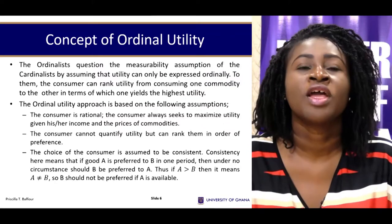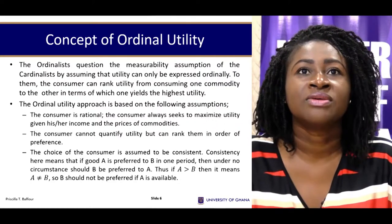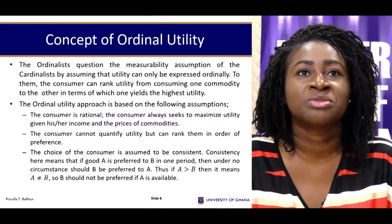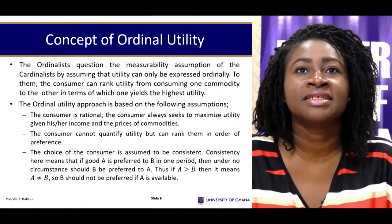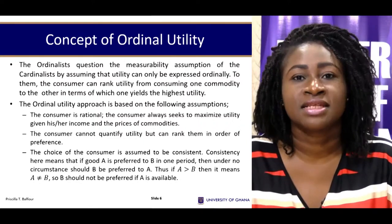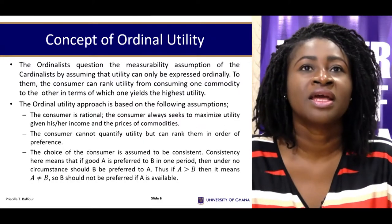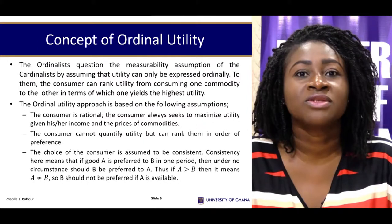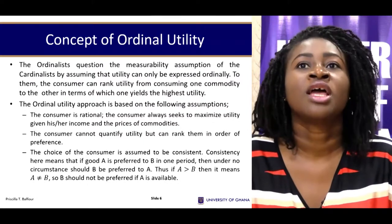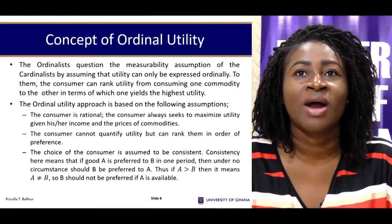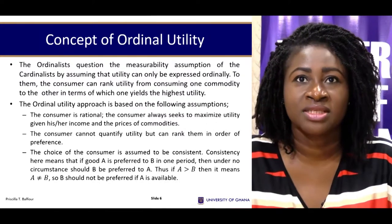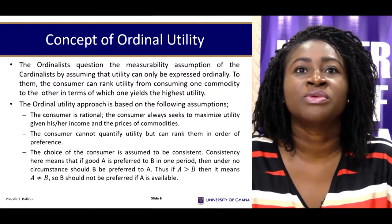In terms of the ordinalist utility approach, the key question the ordinalists raise is the measurability assumption of the cardinalists. They believe that individuals cannot objectively measure the satisfaction they get from consuming a good. They propose rather that people are able to rank their satisfaction — for example, you can say that your satisfaction from a plate of jollof is higher than from a plate of kenkey, meaning you are ranking rather than measuring.